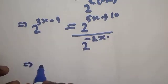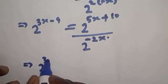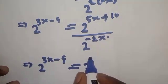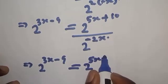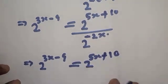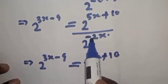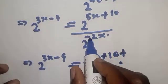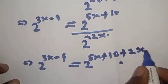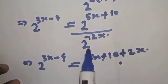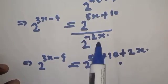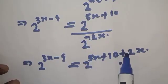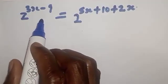So this implies we have 2 raised to power 3x minus 9 equal to 2 raised to power 5x plus 10, over 2 raised to power minus 2x. Now this minus 2x in the denominator — since we have the same base, it becomes plus 2x when brought to the numerator.